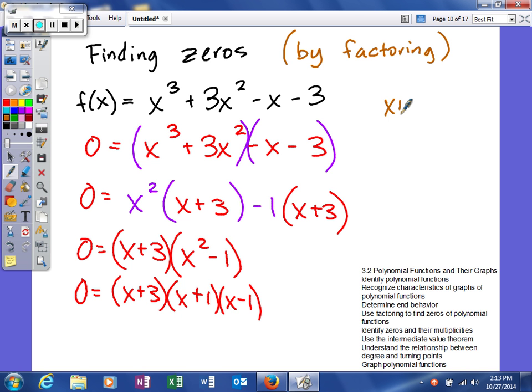So x plus 3, when you solve that, you'll get a solution of negative 3. When you set x plus 1 equal to 0 and solve, you get a solution of negative 1. And then x minus 1 equal to 0 will give us a solution of positive 1. So as you can see through factoring, we can find our zeros of negative 3, negative 1, and positive 1. Now I found three zeros, and as you can see, based on the degree of my polynomial of 3, that is all of the zeros that I'll find for this function.